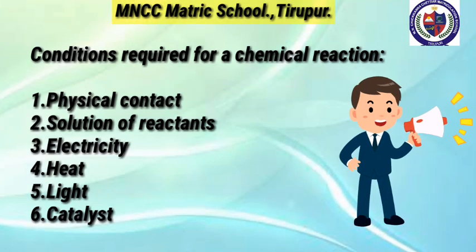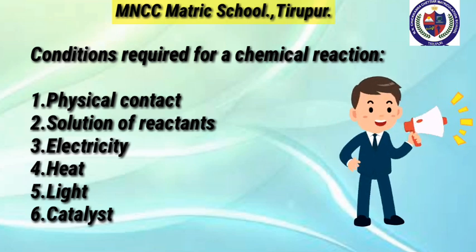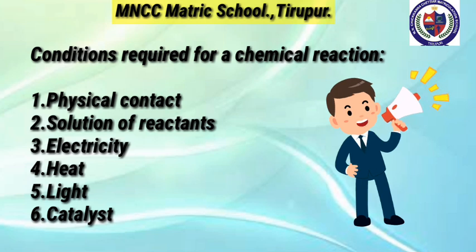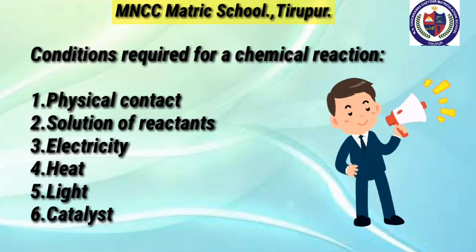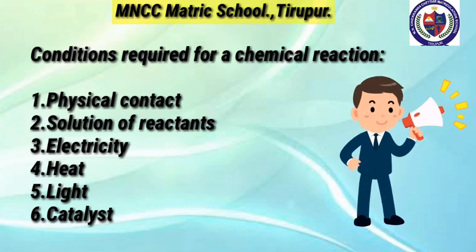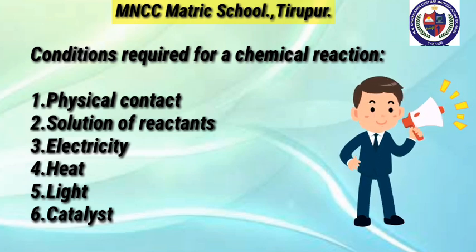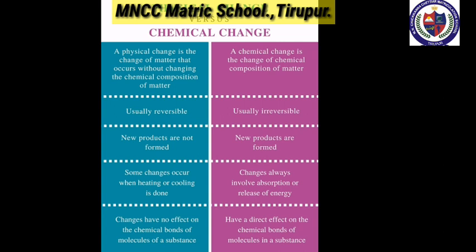In a society, people live in different conditions, not under the same conditions. Likewise, all chemical reactions will not occur under all conditions. For every chemical reaction to take place, certain specific conditions are required. Chemical reactions can occur through: (1) physical contact, (2) solution of reactants, (3) electricity, (4) heat, (5) light, and (6) catalyst.